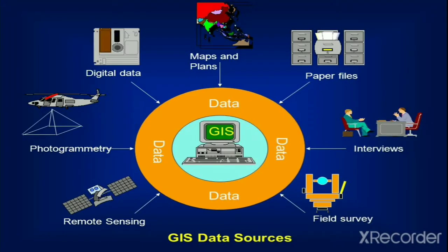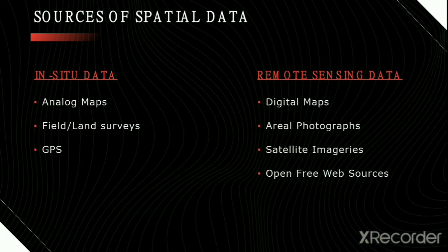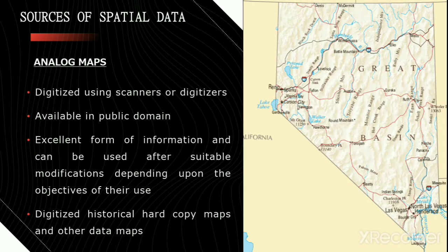There are various sources from which GIS will receive spatial data. We have two major sources: in-situ data and remote sensing data. Analog maps, field surveys, and GPS are various forms of in-situ data. At the same time, digital maps, aerial photographs, satellite imageries, and several open free web sources form the spatial data through remote sensing.